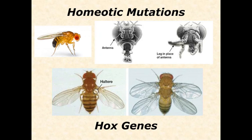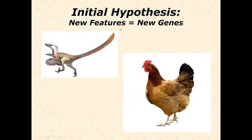As this work began, researchers started with an initial hypothesis: that new features evolving in different groups would result from newly evolved genes. The reasoning was that if genes build animals, then a subset of toolkit genes must account for why a fruit fly looks different from a scorpion, or a chicken looks different from an elephant. Each different animal would need different genes to explain its unique features.